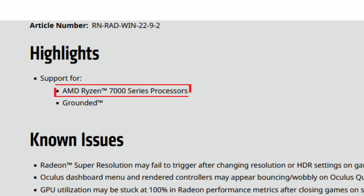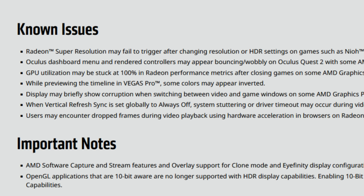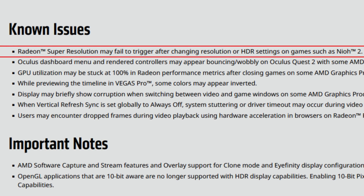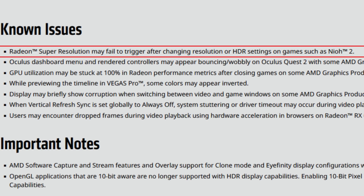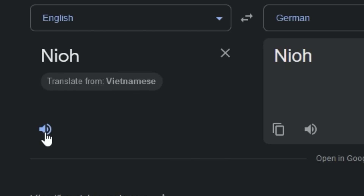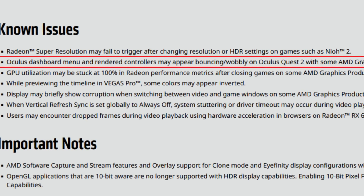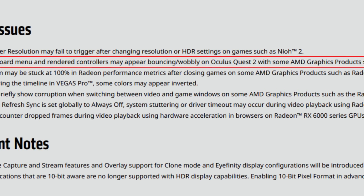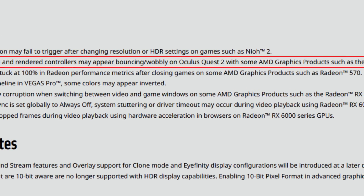First we have the highlights: support for AMD Ryzen 7000 series processors and support for Grounded. As for the known issues, Radeon Super Resolution may fail to trigger after changing resolution or HDR settings on games such as Nioh 2. The Oculus dashboard menu and rendered controllers may appear bouncing or wobbly on Oculus Quest 2.